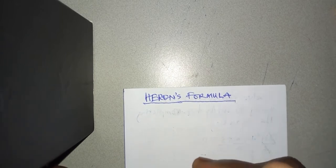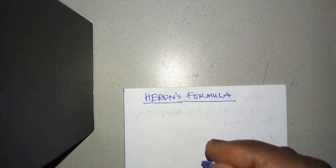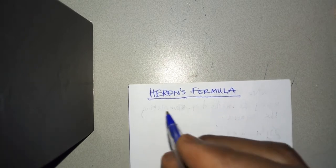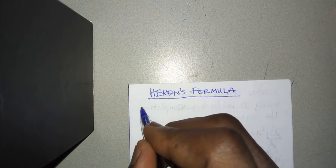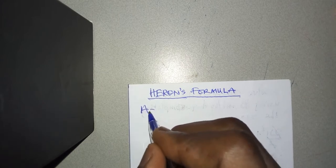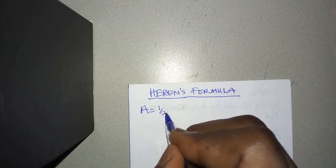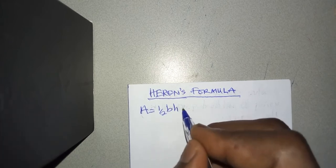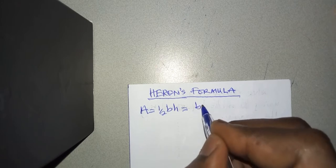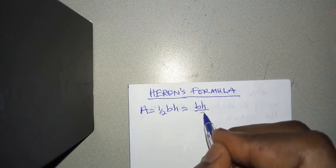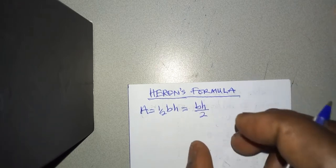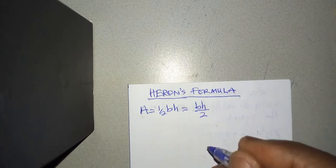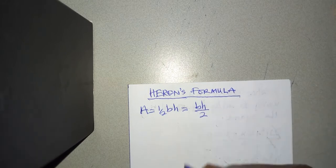Now the basic way to find the area of a triangle — we all know the formula: area equals half times base times height, which is the same as base times height all over two. That is the basic formula we all know, and that is when you are given a right-angled triangle where you have the height and the base.